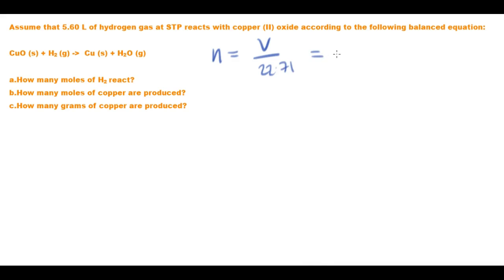So in this particular instance, the number of moles of our hydrogen gas is going to be 5.6 litres divided by 22.71 litres.